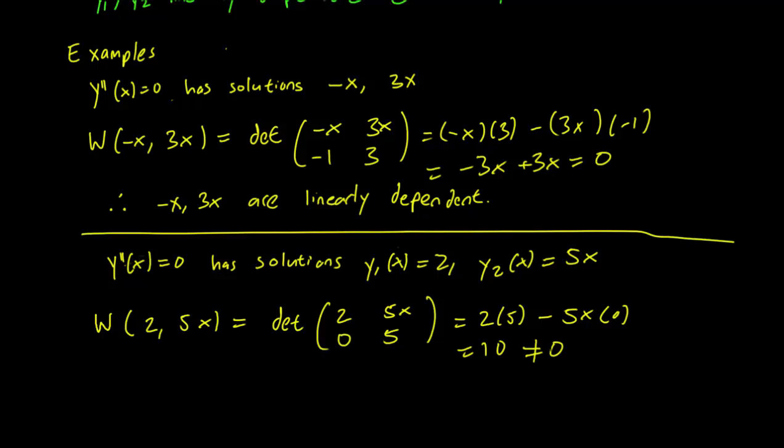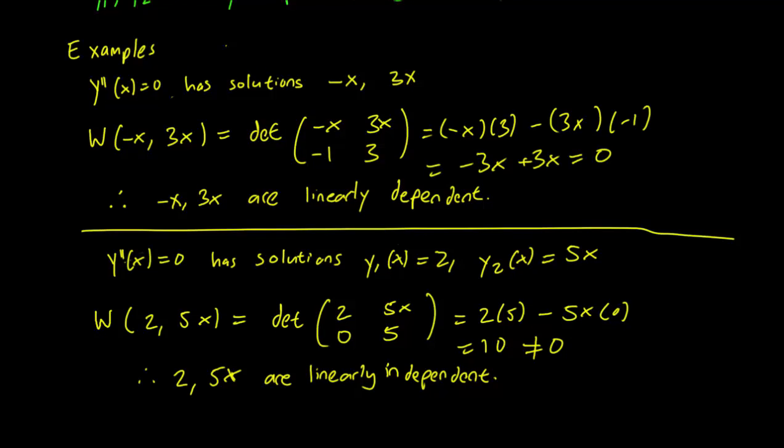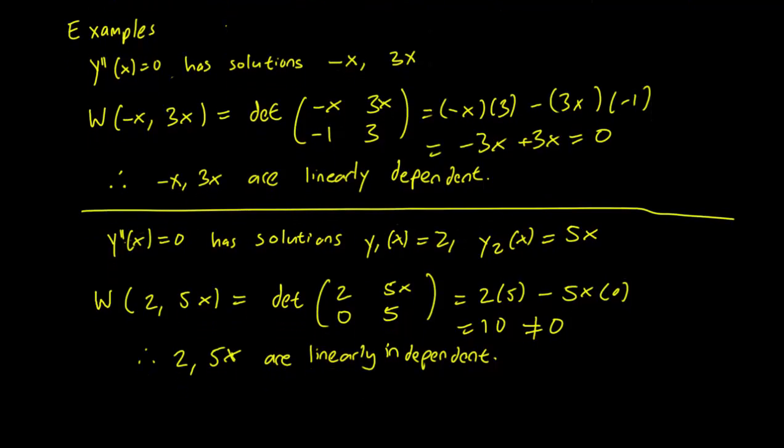And we conclude that 2 and 5x are linearly independent.